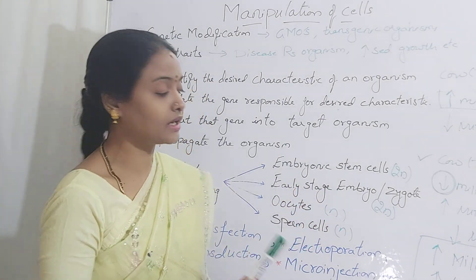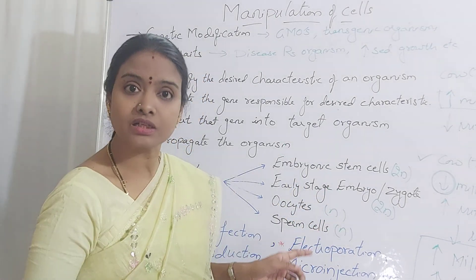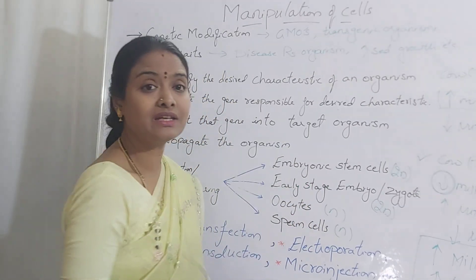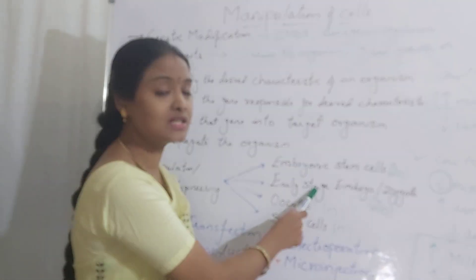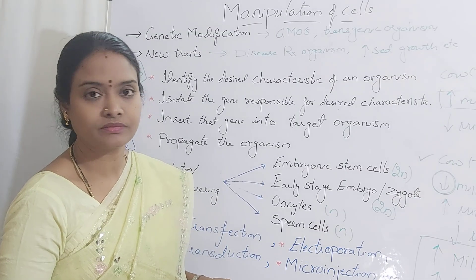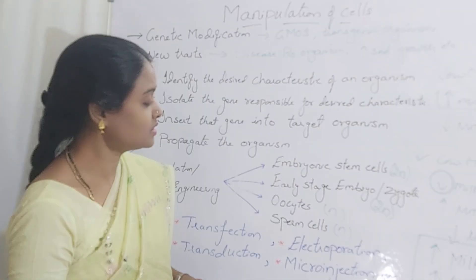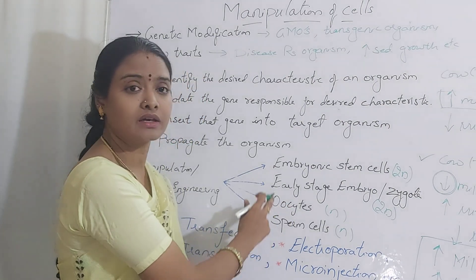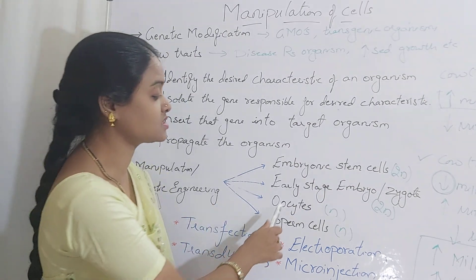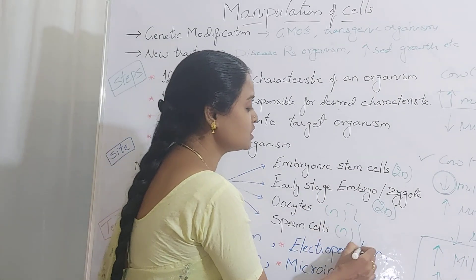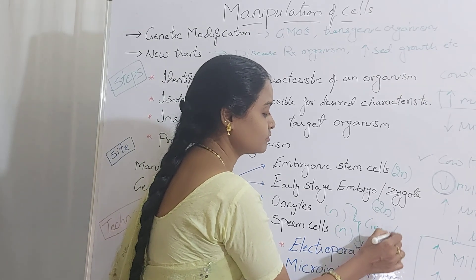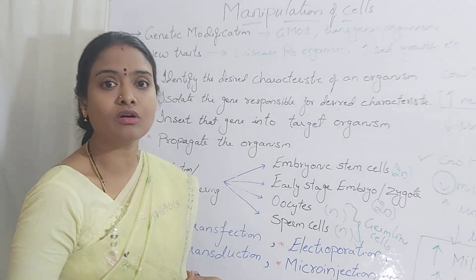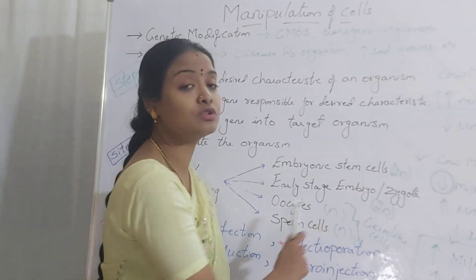The second site is the early-stage embryo or zygote — after fertilization these cells are diploid. The desired gene is introduced directly into the developing embryo. The third site uses oocytes (egg cells) or sperm cells, into which the gene of interest is introduced directly. Alternatively, germline cells — the precursor cells for gamete production — can also be introduced with the desired gene.